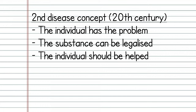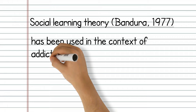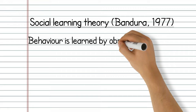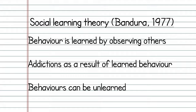The first disease concept model began with a prohibition movement in the 19th century and identified the substance itself as the problem, assuming the individual was not to blame and postulating the substance should be banned but the individual does not need help. The second disease concept then acknowledges that the individual has the problem, but the substance can be legalised and the individual should be helped. The social learning theory has been used in the context of addictions, but its use originated in the general context of how humans learn behaviours from each other. The discovery of mirror neurons may also provide support for the basis of why we imitate others.